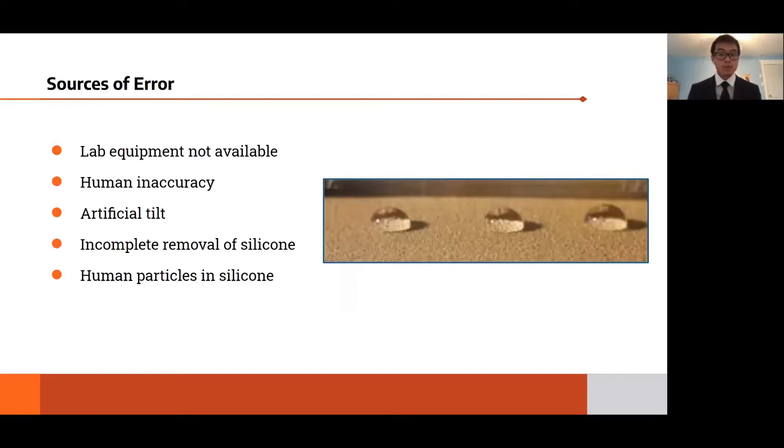Also, when removing the silicone impression from the sandpaper, some silicone remnants were left behind which compromised the integrity of the imprints in some areas. Lastly, for the silicone application process, human skin cells and other germs could have gone into between the gaps of the nanoparticles of the sandpaper resulting in fewer air gaps and thus a smaller contact angle.